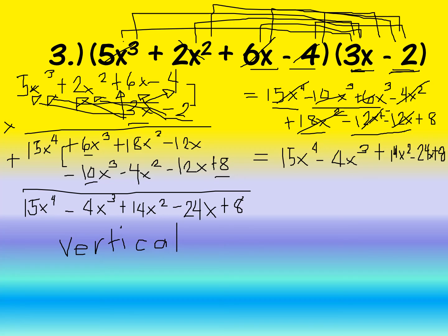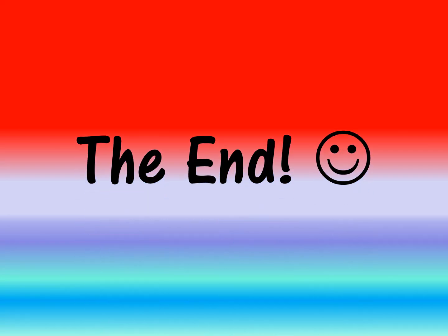That's how simple it is to multiply a polynomial by another polynomial. To summarize: first we covered multiplication of a polynomial by a monomial using the distributive property. Then multiplication of a polynomial by another polynomial, using the vertical method — arranging terms vertically and multiplying like numbers — or the horizontal method, applying the FOIL method for binomials, or the distributive method for expressions with more than two terms.